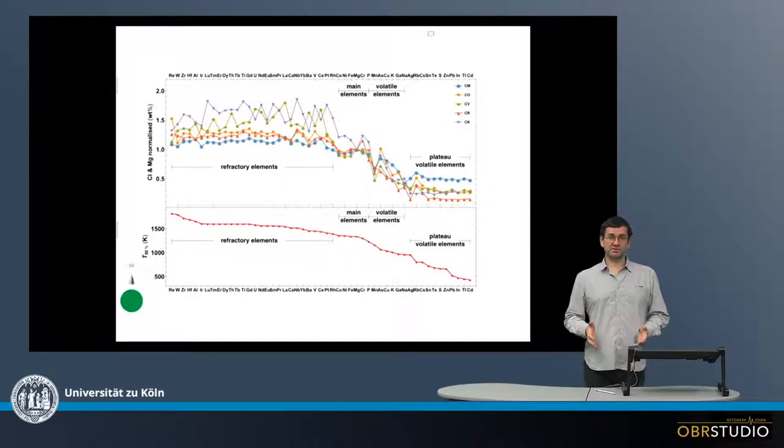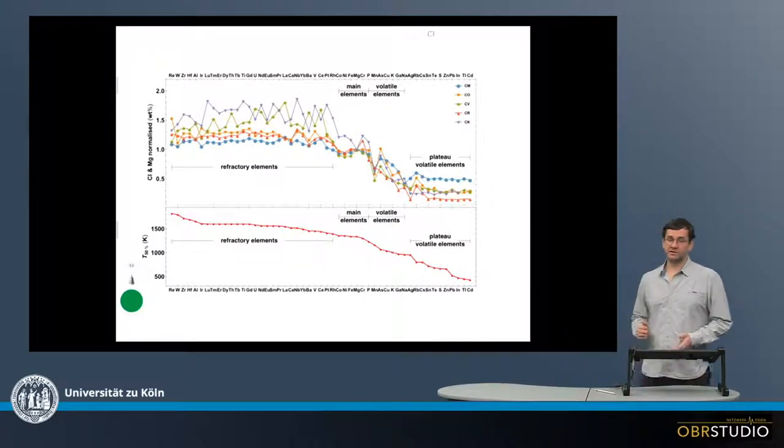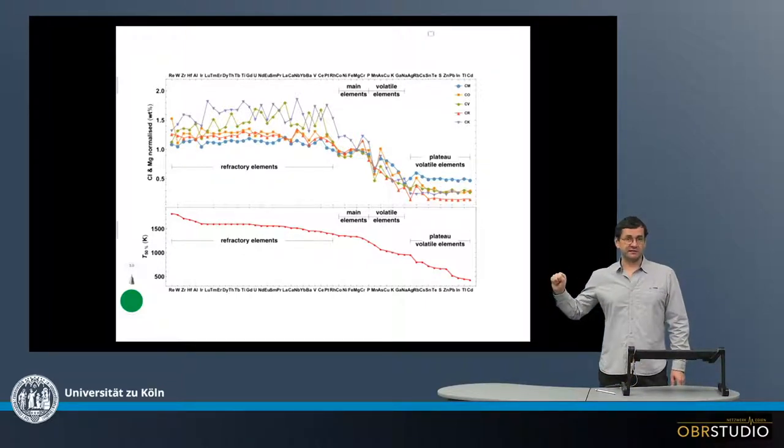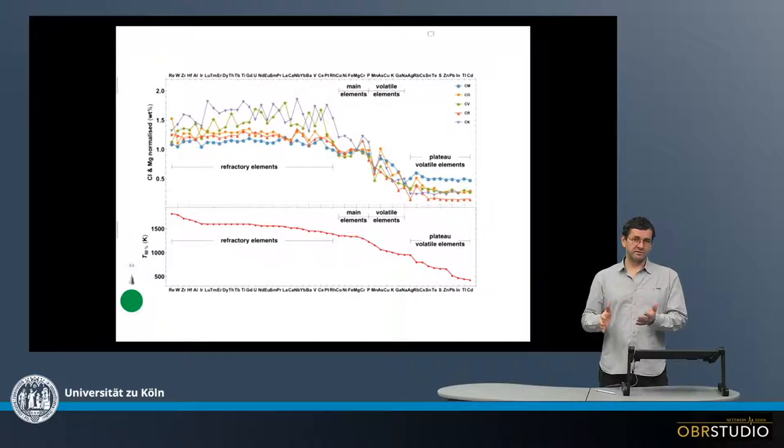The bulk compositions of carbonaceous chondrites have very characteristic element patterns. This is shown in these two plots here. Both plots share the same x-axis on which the elements are plotted. So these are both category plots.